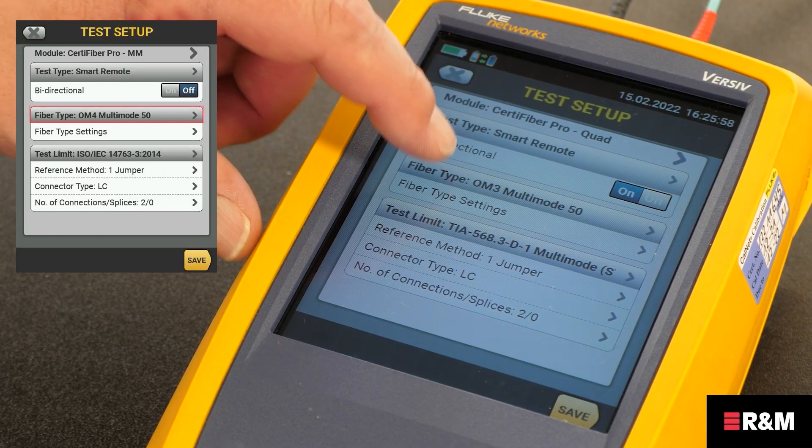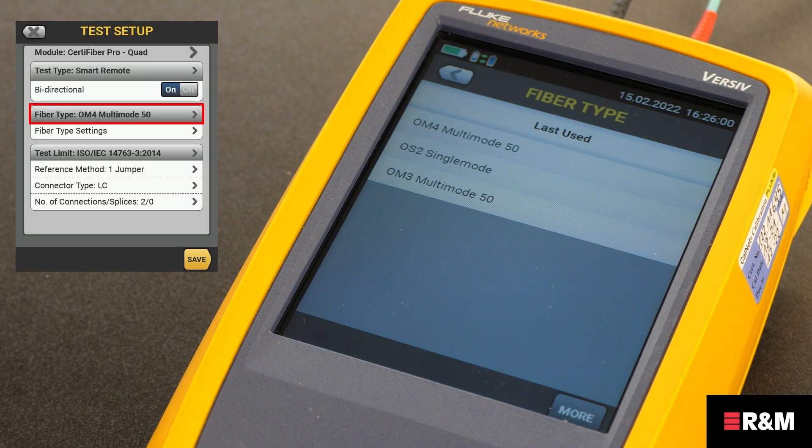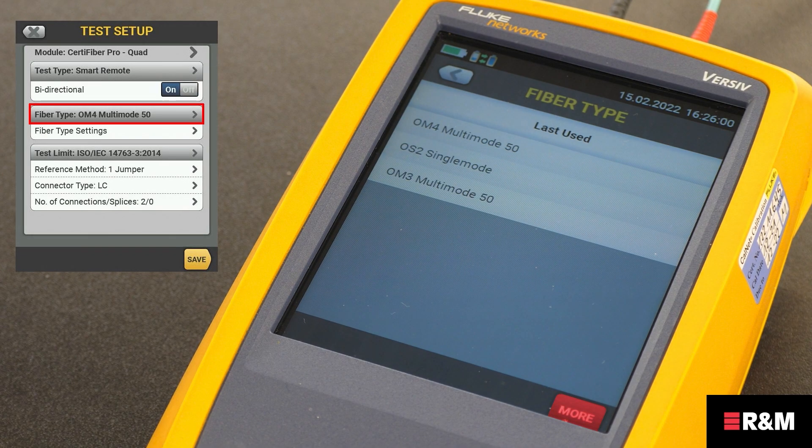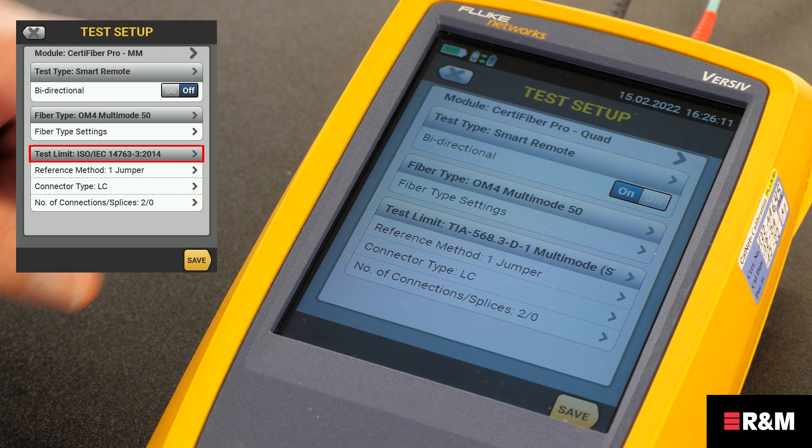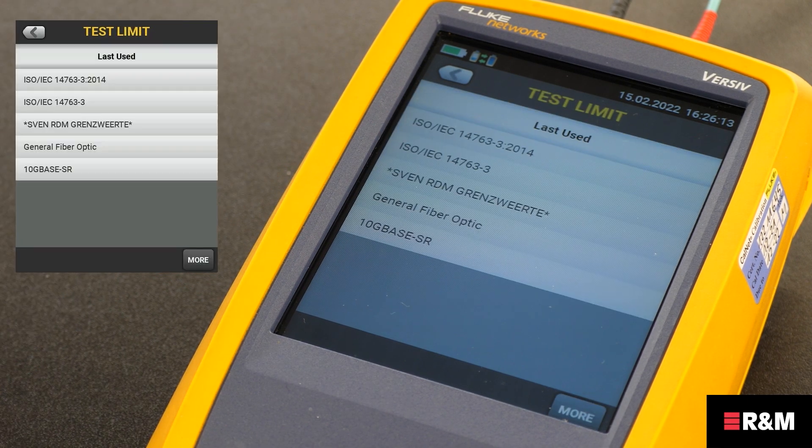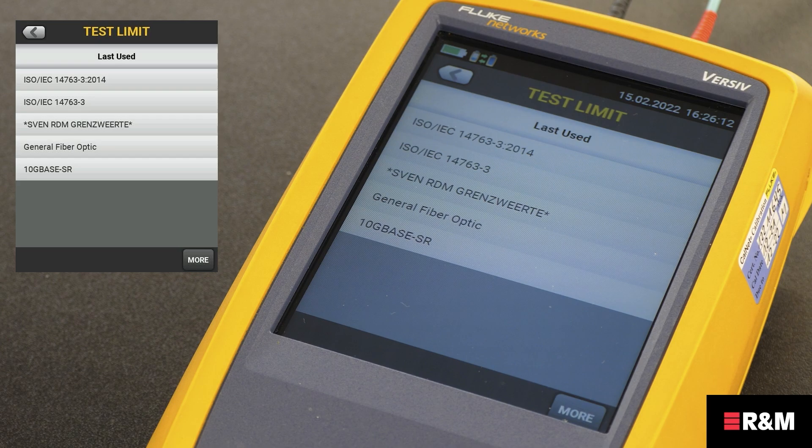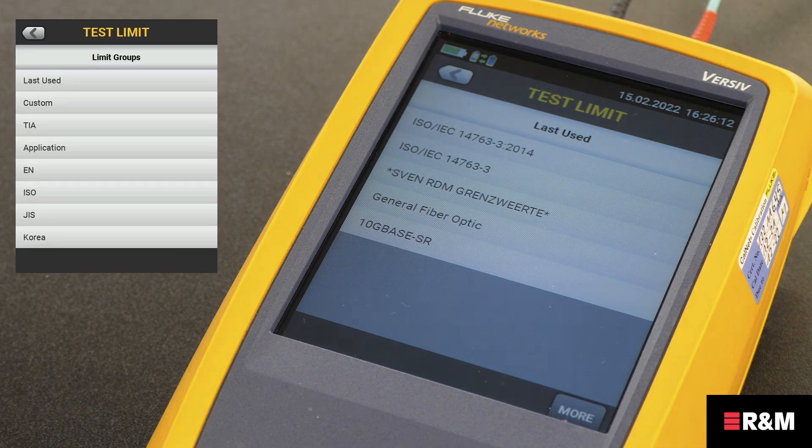Next, select a fiber type that is correct for the type you will test. To see a different group of fiber types, tap More. Select the correct test limit for the job. To see a different group of limits, tap More. Then, tap the standards body and then the standard you need.